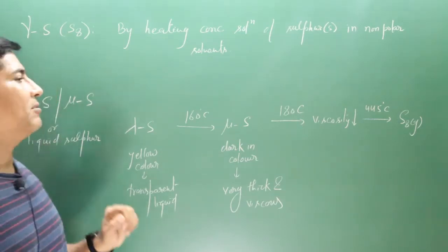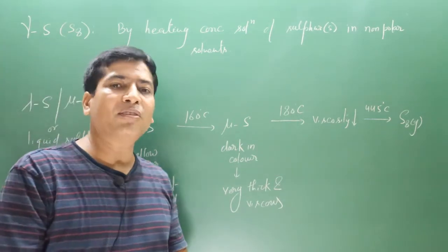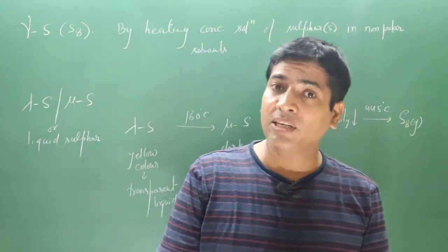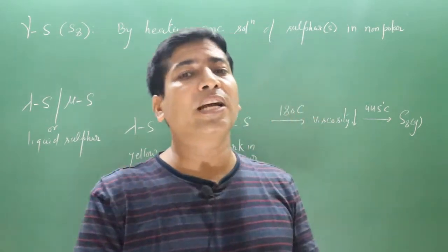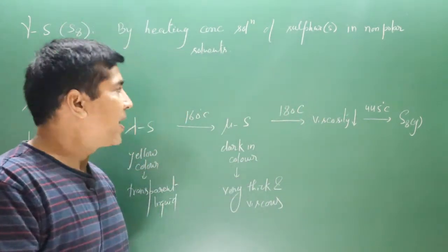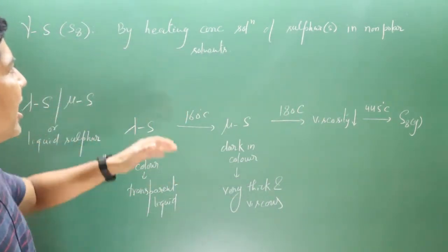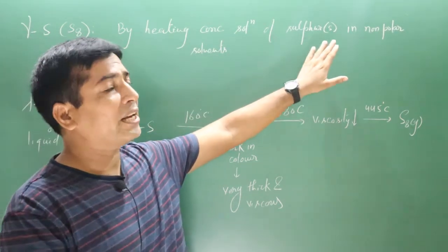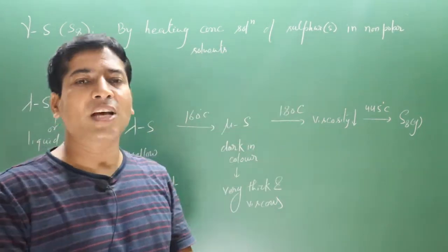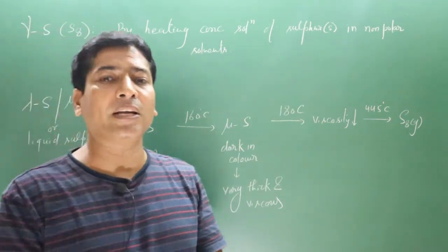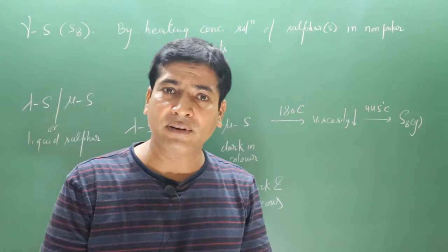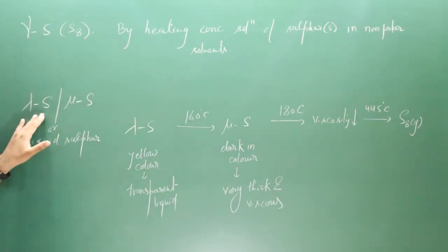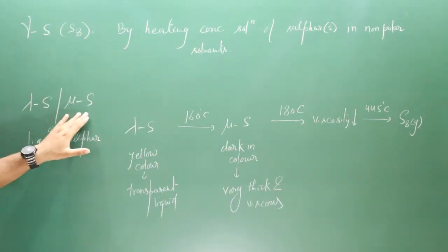Next we have gamma sulfur. The chemical formula of gamma sulfur is also S8, but the arrangement of atoms is different, which is why it shows different properties. Gamma sulfur can be prepared by heating a concentrated solution of sulfur in nonpolar solvents such as benzene, toluene, carbon disulfide, and ethanol.